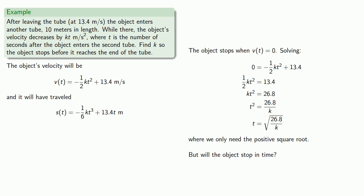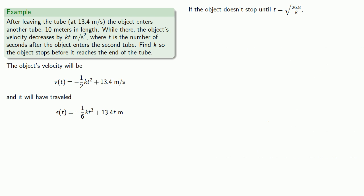Remember that we found that the object stopped moving when t equals the square root of 26.8 over k. Let's figure out where the object is at the time it stops.